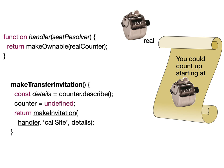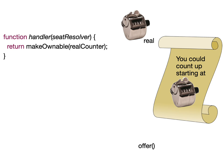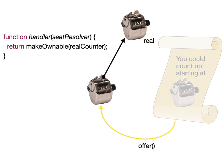The handler included in the invitation is a piece of code that will make a new ownable counter referring to the same original real counter. The offer operation is the means by which an invitation is redeemed to participate in a smart contract, to get the seat and in this case also a new ownable counter. Invoking the handler invalidates the invitation — it has been used up — and the offerer now has a new ownable counter.